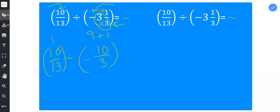Then, we are going to keep, change, flip - or keep, change, reciprocal. You keep the first fraction, so it's going to be 10 thirteenths.